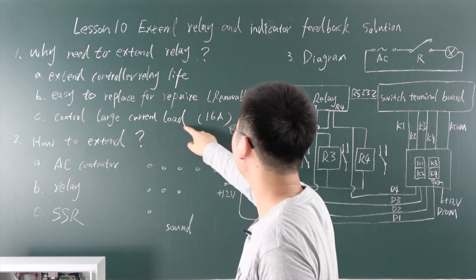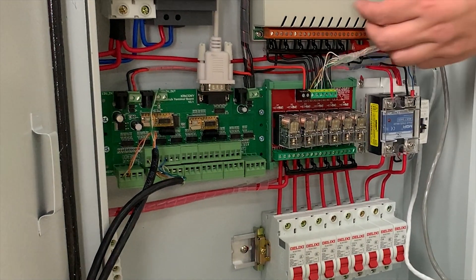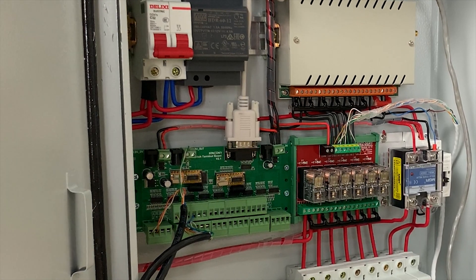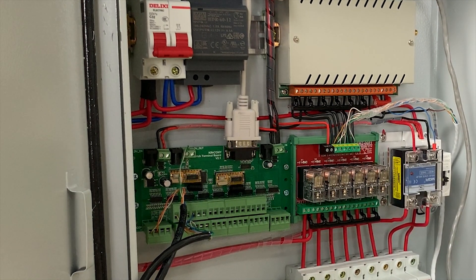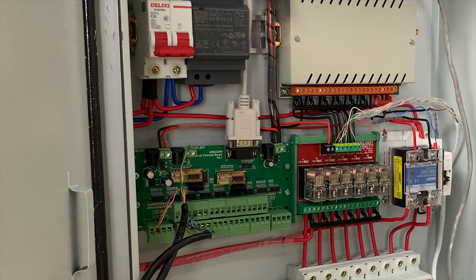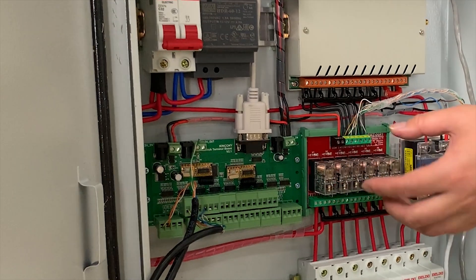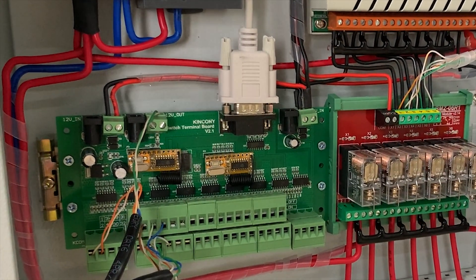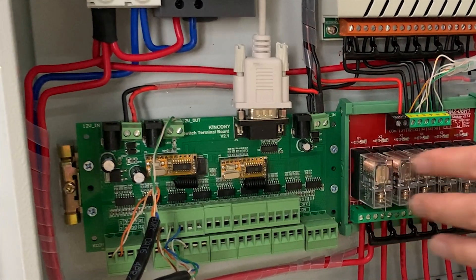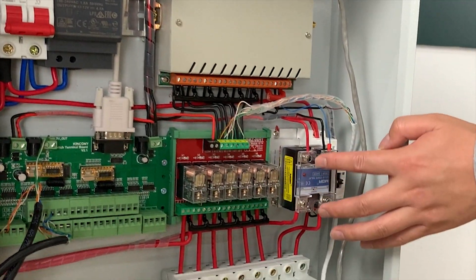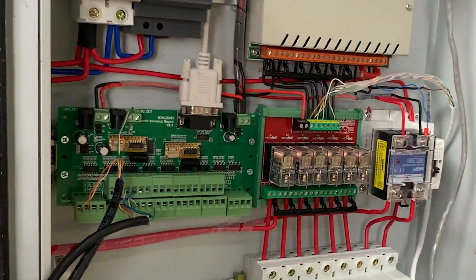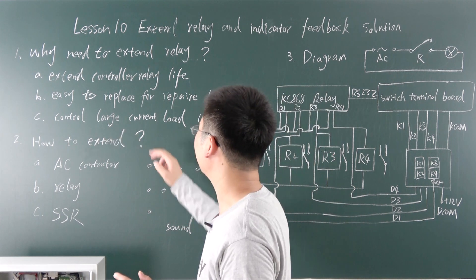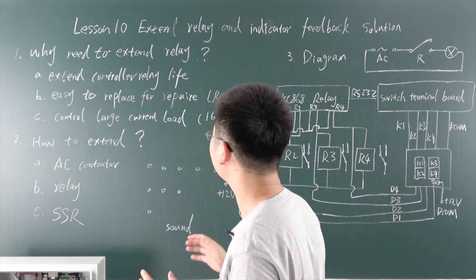The third reason is to control large current loads. The relay inside our box is rated at 10 amperes. If you need 16 amperes for air conditioning, or more — like 20 or 25 amperes — you just choose the appropriate external relay with the right current rating. I have installed eight channels here: a small-current relay, an SSR at 20 amperes, and an AC contactor at 25 amperes.